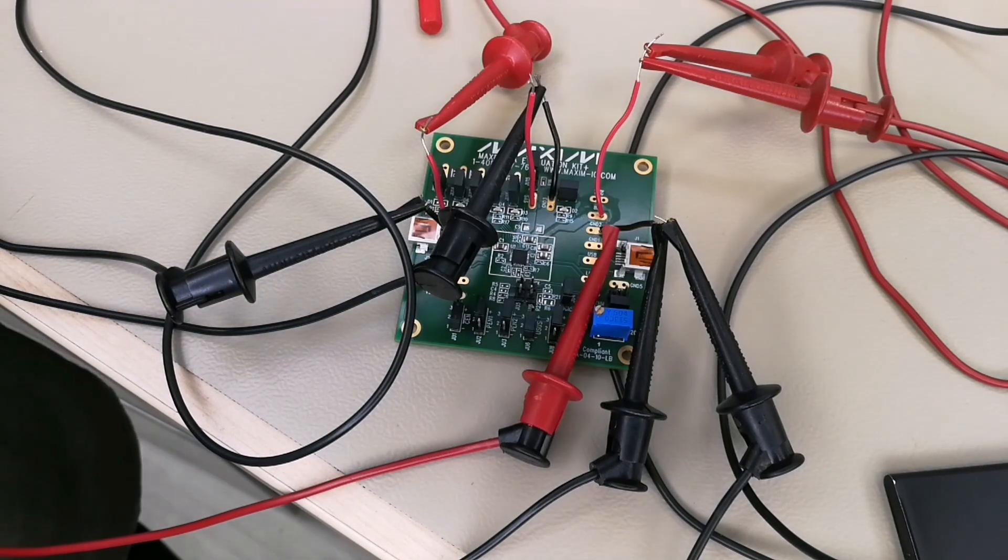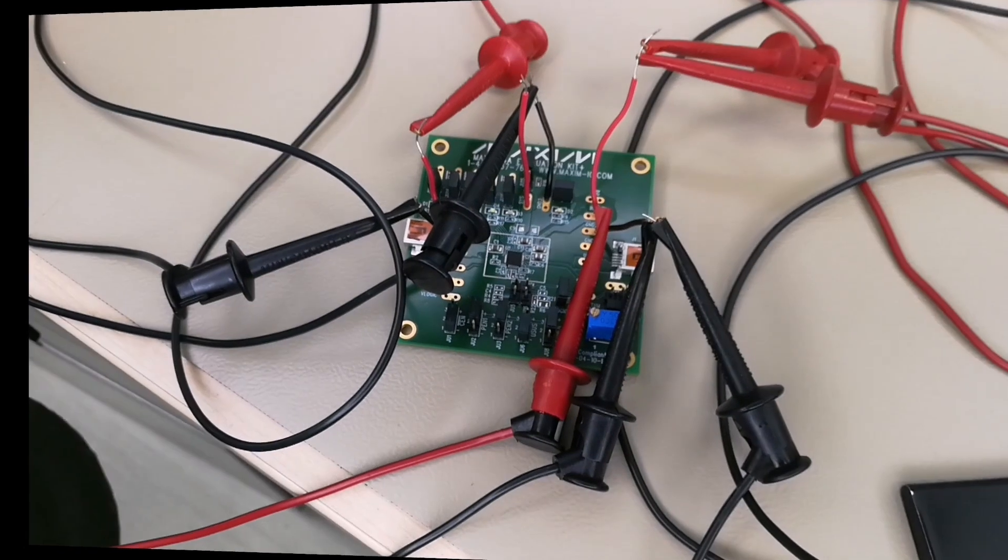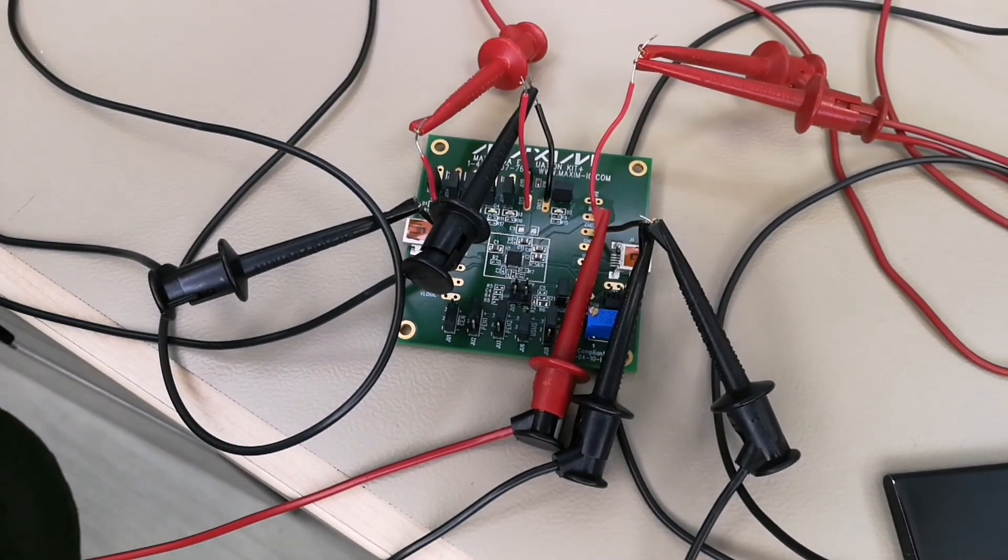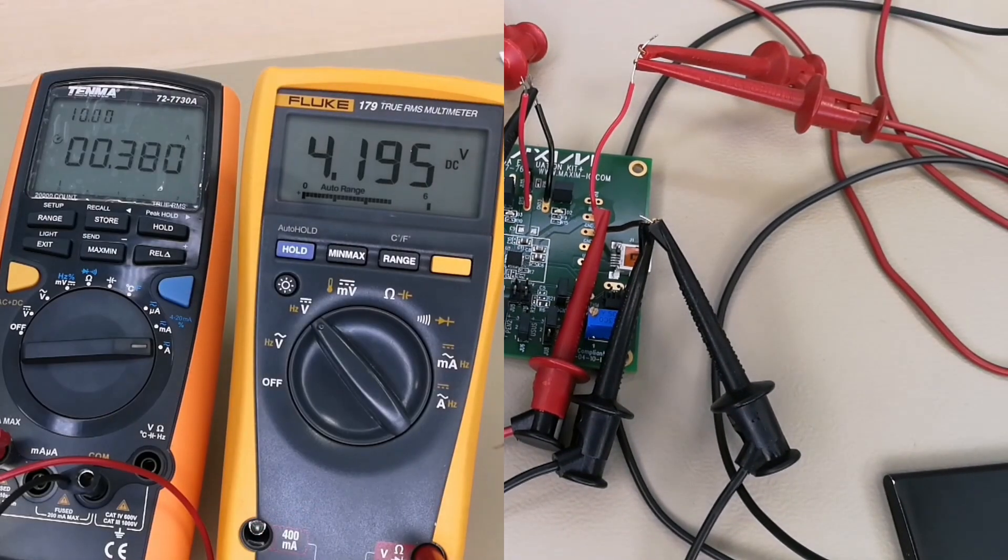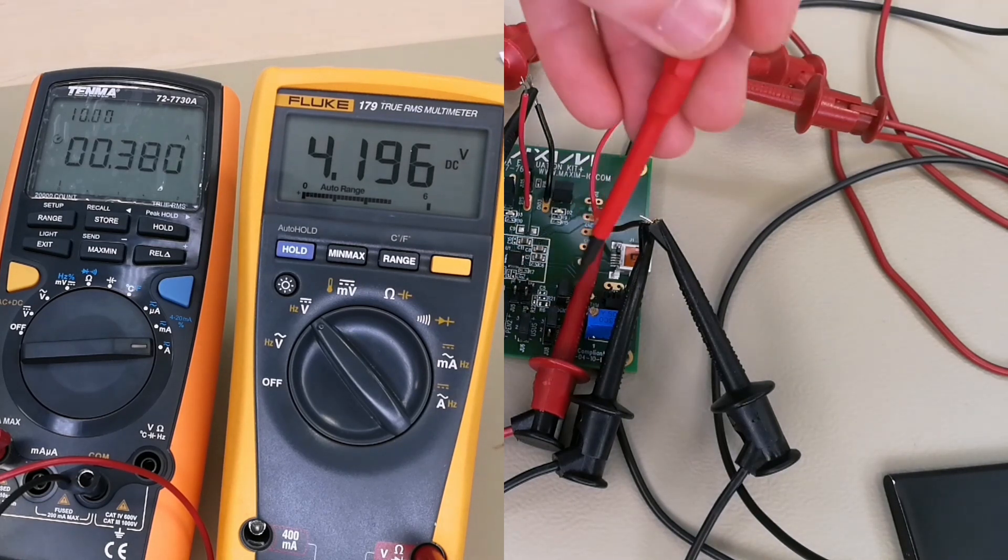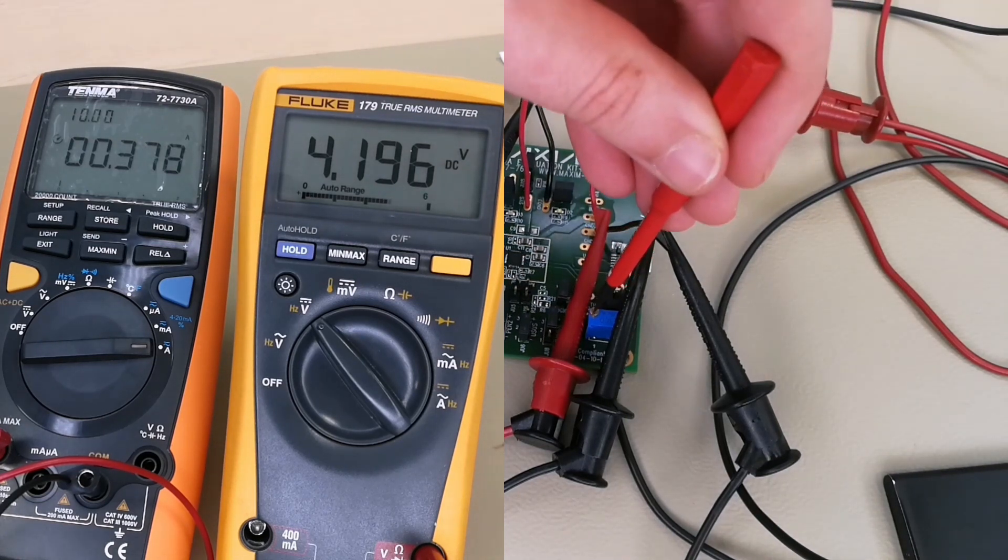We can now check out how the JEITA standards work with this chip. Once the battery temperature is getting closer to the limits, the charging current into the battery reduces relatively, as we can see here as I increase the potentiometer resistance.